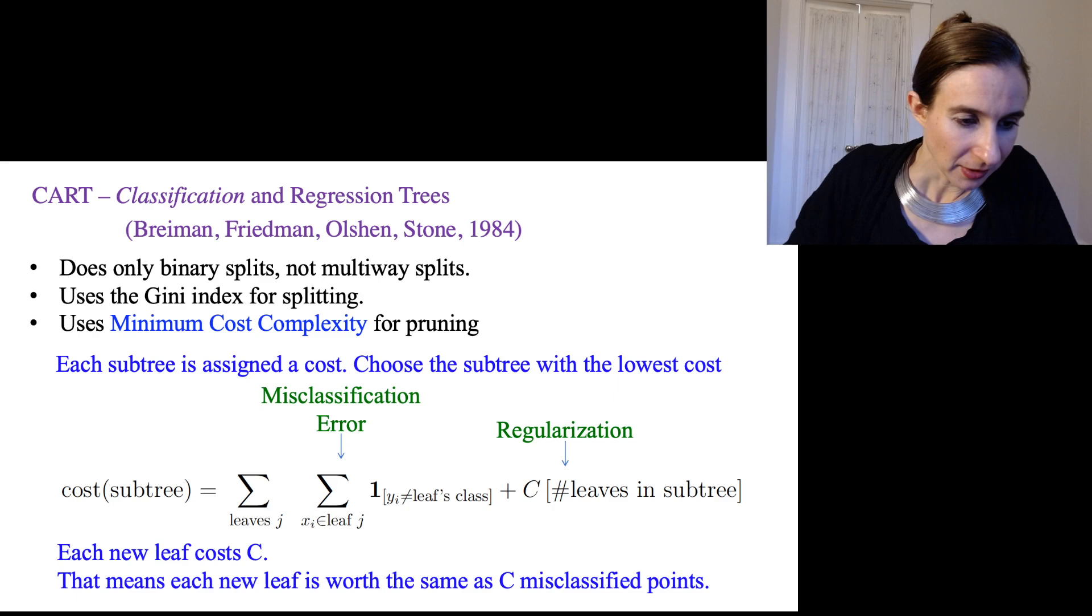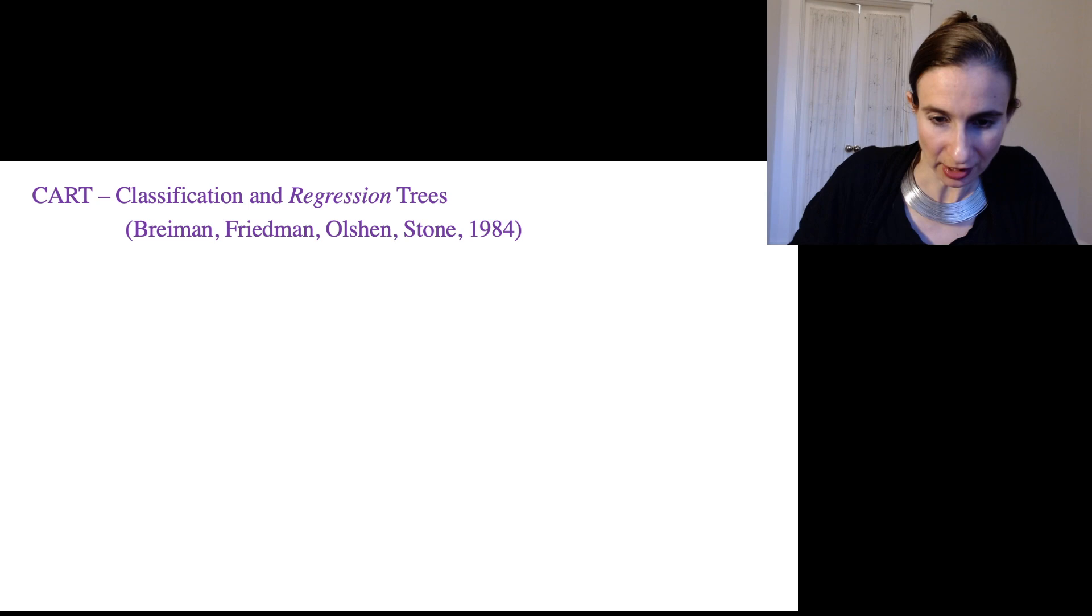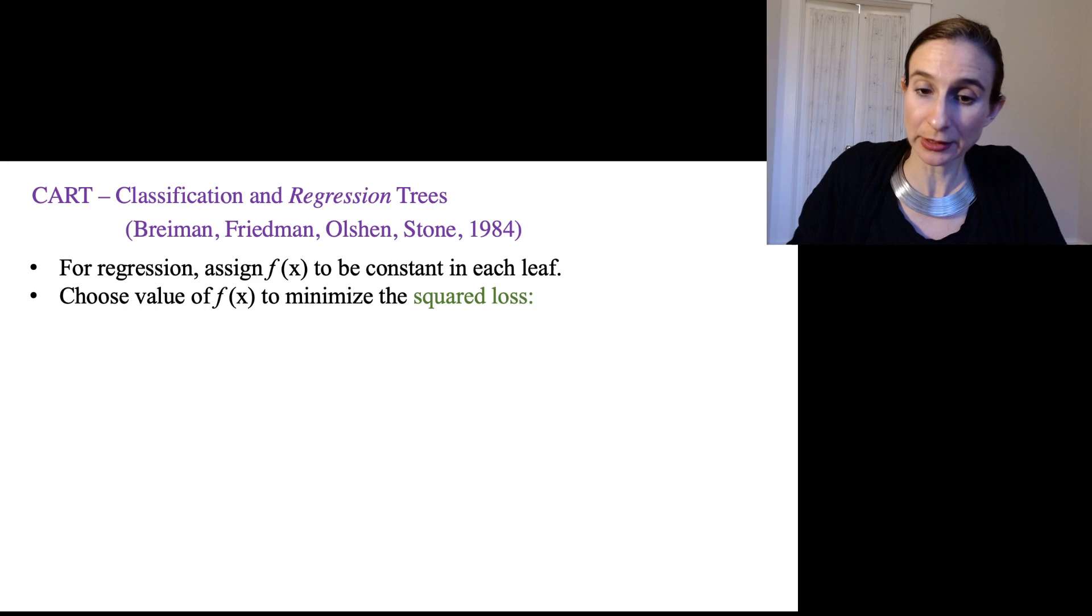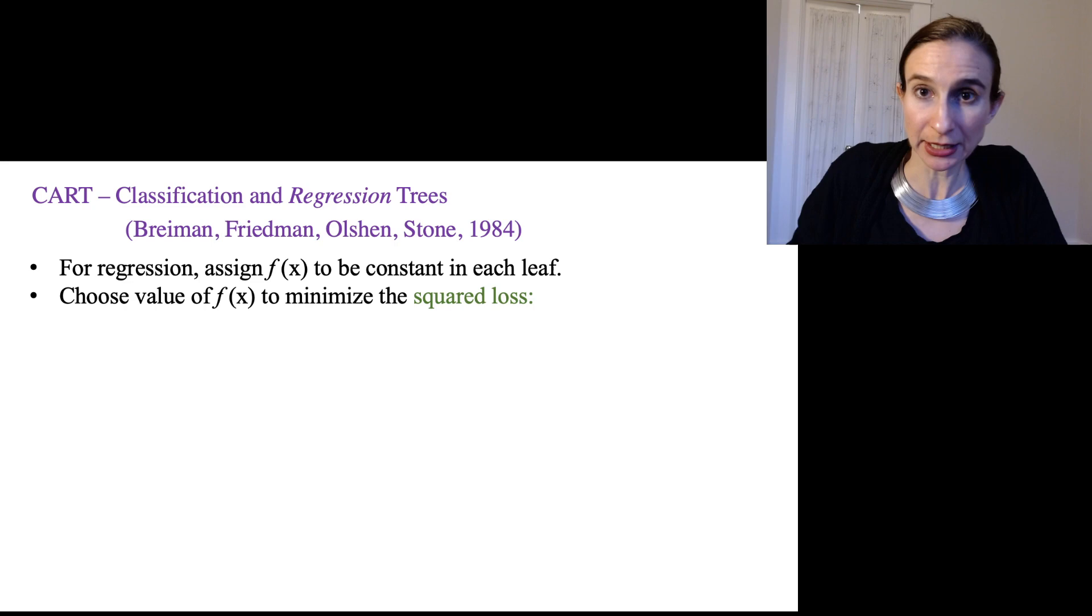Okay, so that's classification trees, CART for classification. Let's talk about CART for regression. Now for regression, we're going to assign the predictions to be constant within each leaf. And then we'll choose the function value to minimize the squared loss within each leaf. Now if you think about that carefully, what it ends up meaning is that you end up just taking the average of the labels within each leaf. So remember the labels here are real valued because we're doing regression.